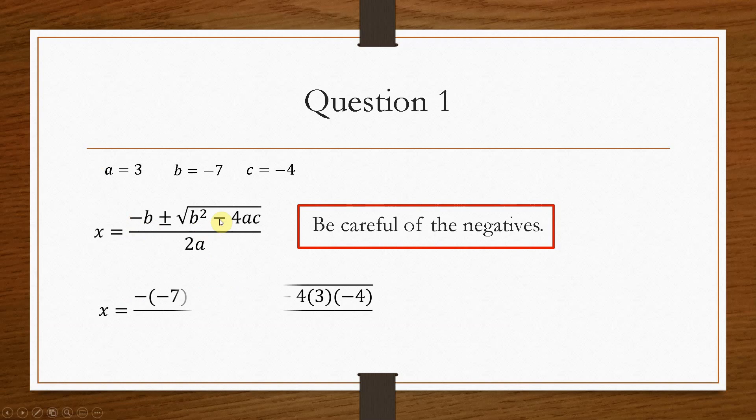So we have to be very careful because we'll have negative negative 7 plus or minus. This means there are two separate calculations going on. And then minus 7 squared, then minus 4 times 3 times minus 4, divided by 2 times 3.